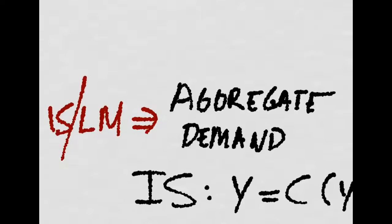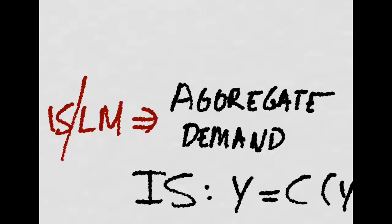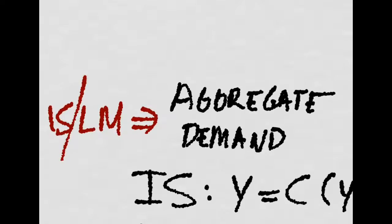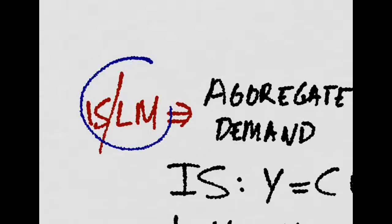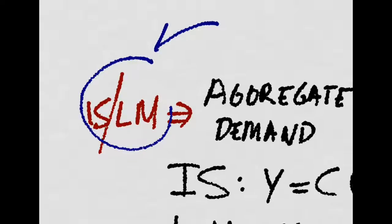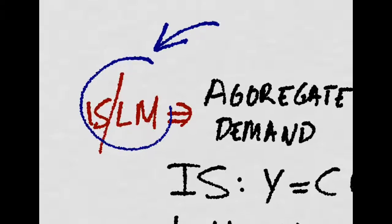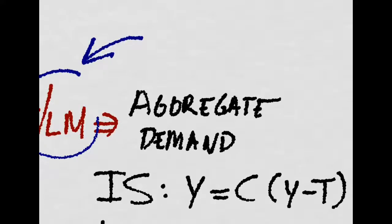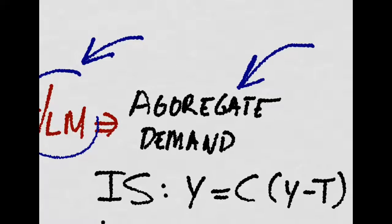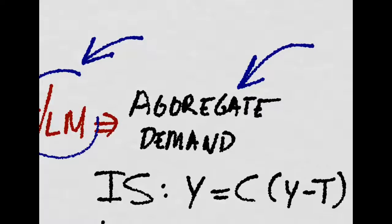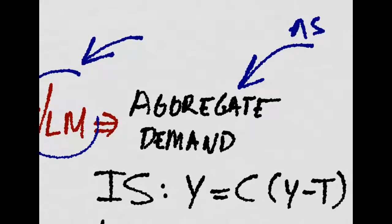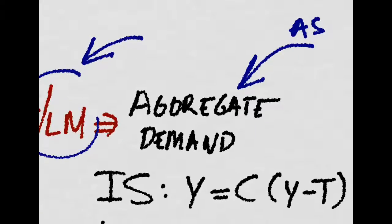Now we derive the aggregate demand from the basic IS-LM model. Remember, the IS-LM is a short run model where prices don't change, but whenever we're looking at the aggregate demand and we plot it with the aggregate supply, prices actually do change.